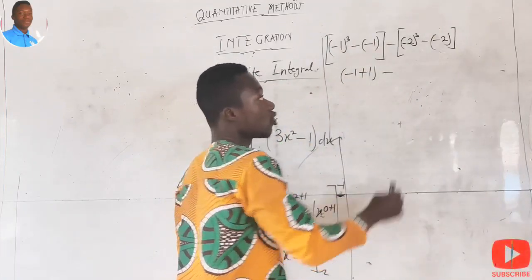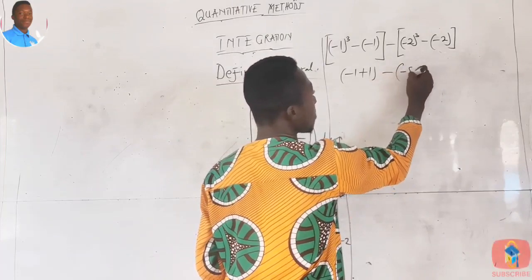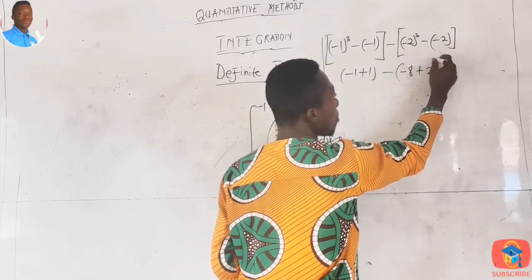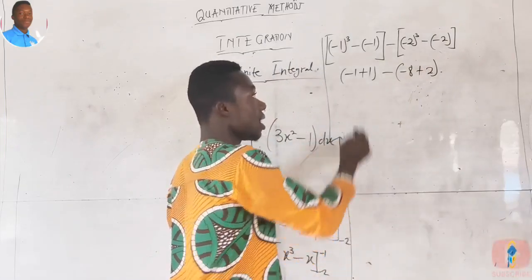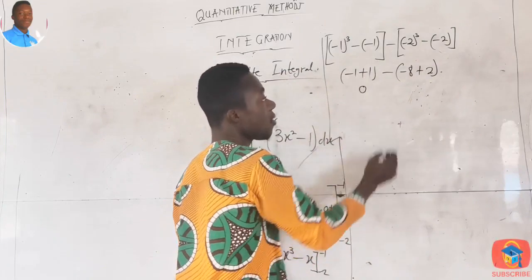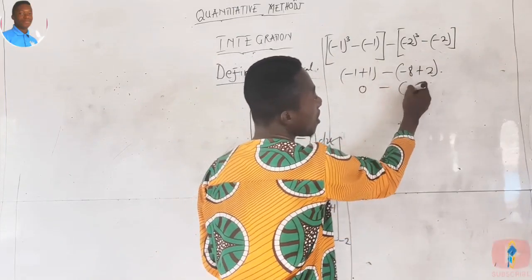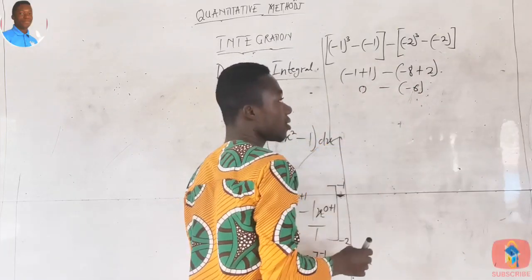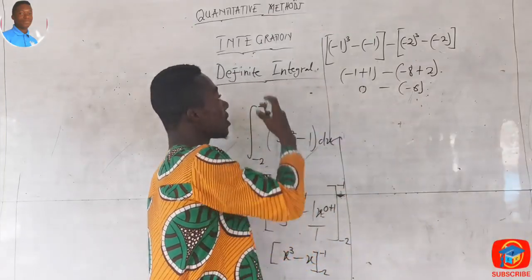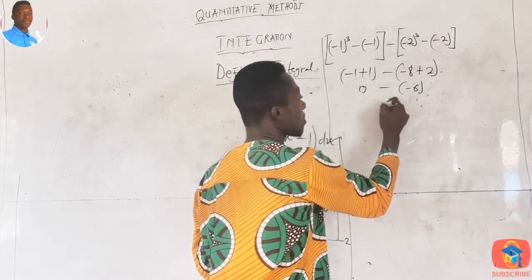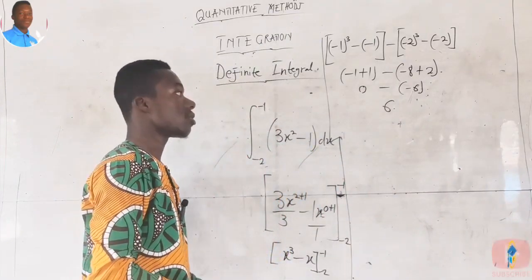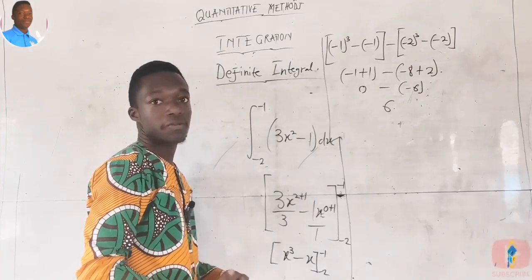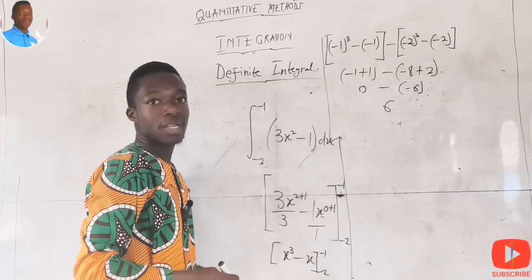Continuing: negative two cubed is negative eight, and negative negative two gives positive two. So we have (−1 + 1) − (−8 + 2), which is 0 − (−6), giving us positive 6. The integration of this definite function gives a final answer of 6. This is how we integrate a definite function having a limit.